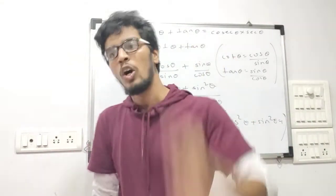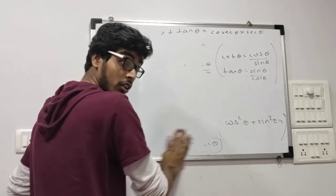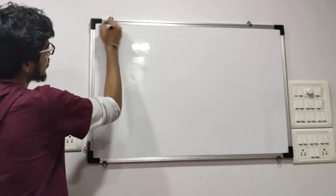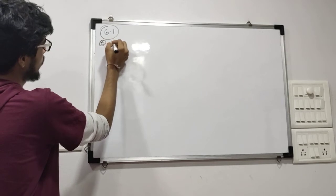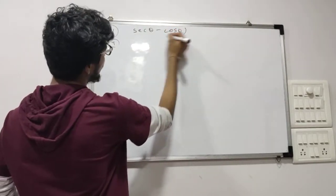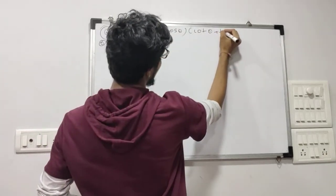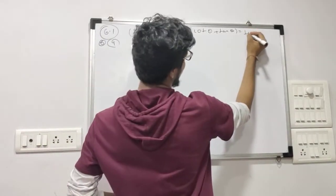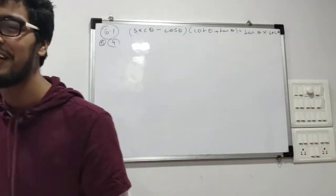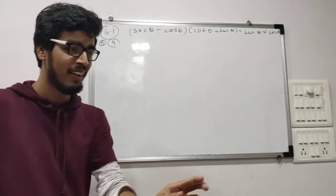So the rule is: always, always remember — cot, tan, sec, cosec — convert them into sin or cos. That's it. If it is already in sin or cos, no issues. But if there is cot, sec, cosec, or tan, always convert into simple ratios. Now let us look at the next question — any doubts? No. Okay, next question: 6.1, question 4 — sec theta minus cos theta into cot theta plus tan theta is equal to tan theta into sec theta.